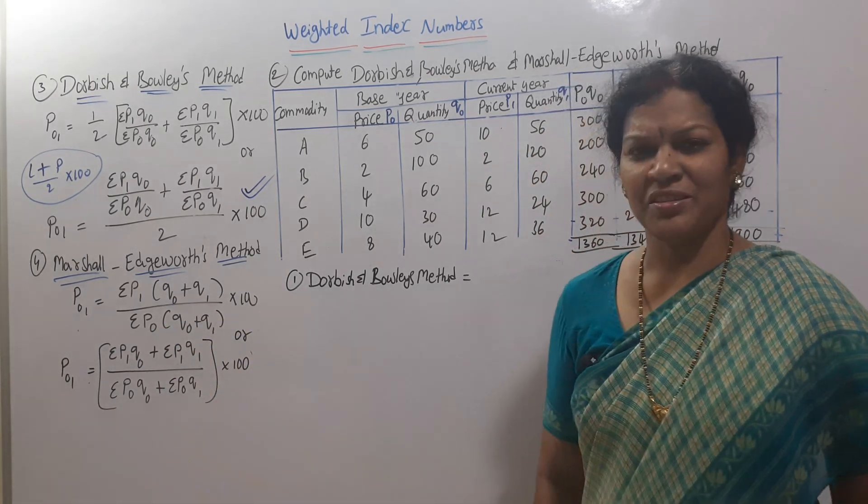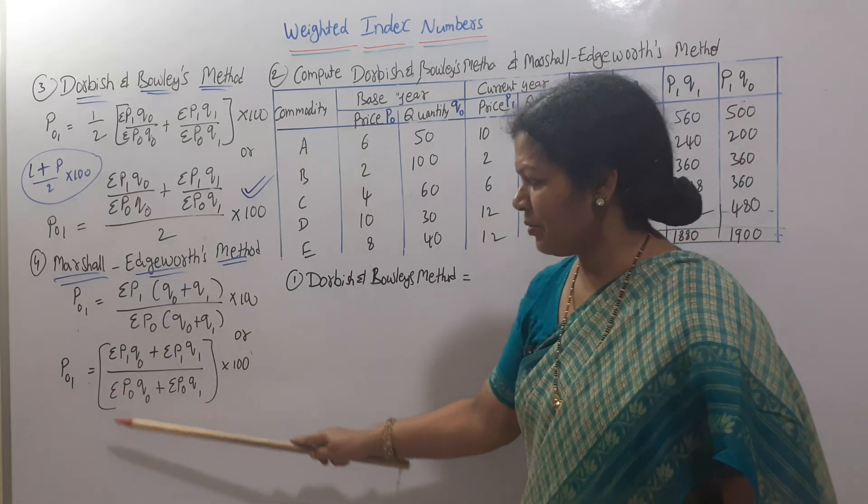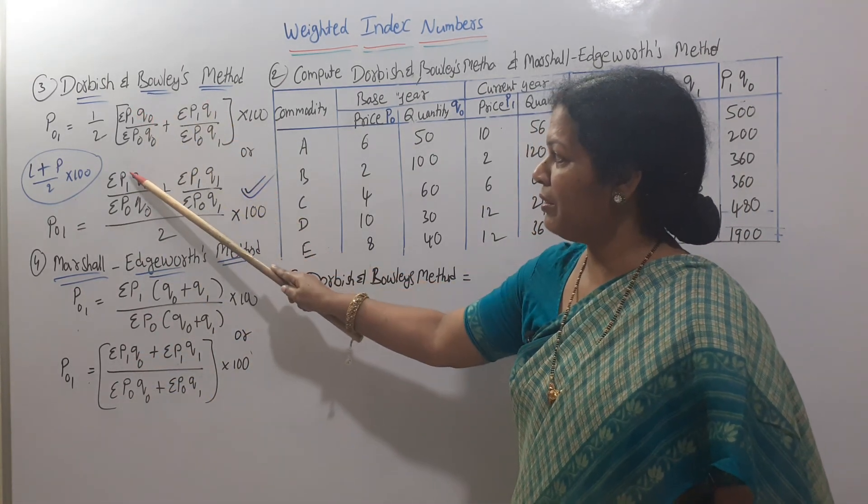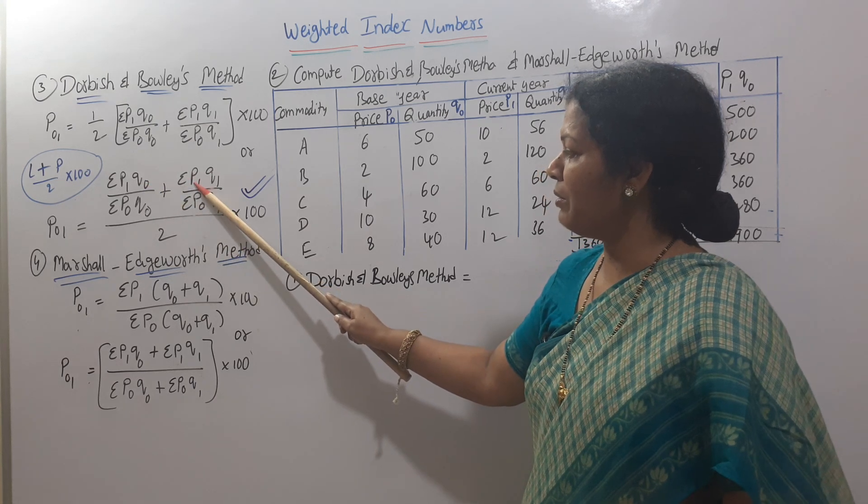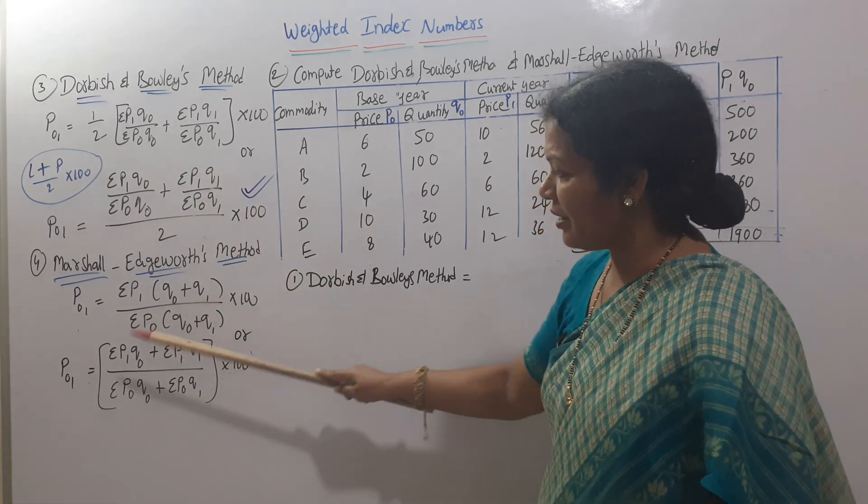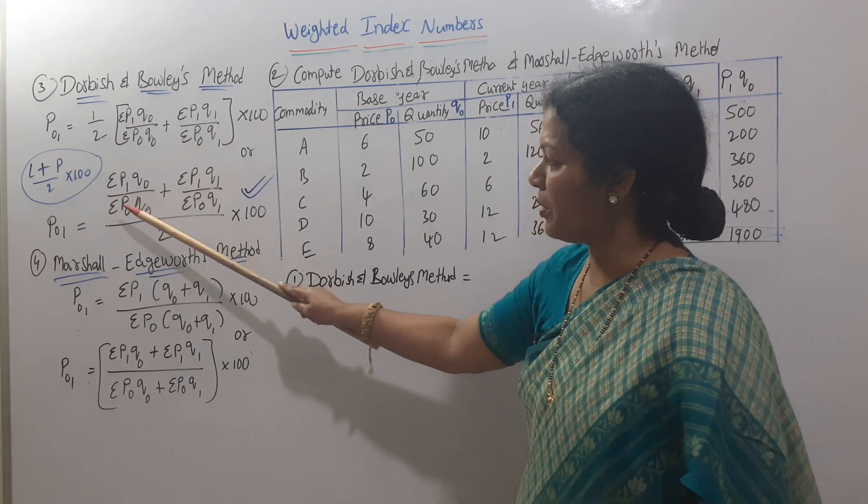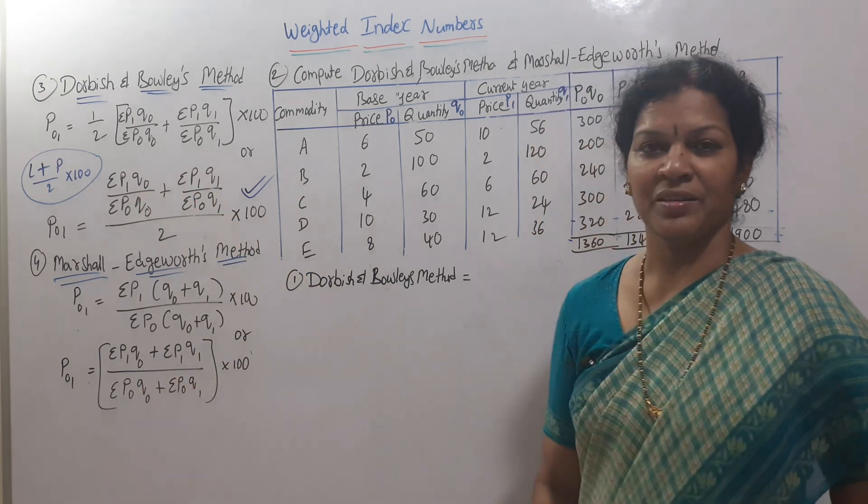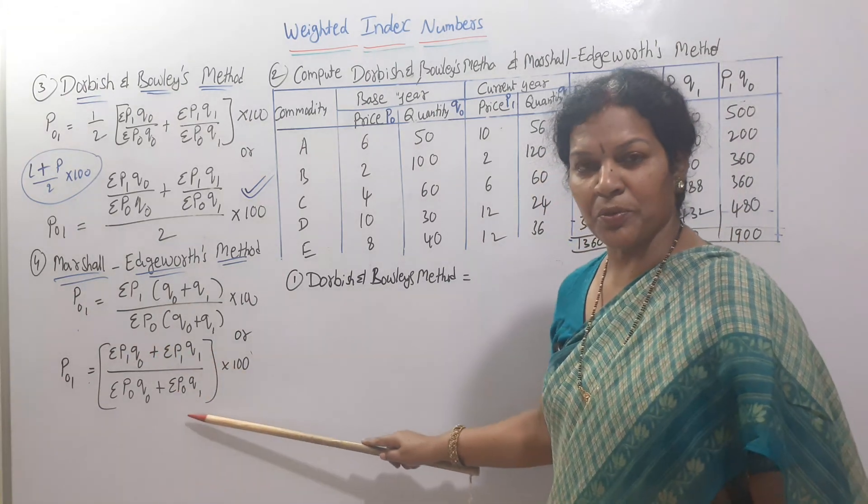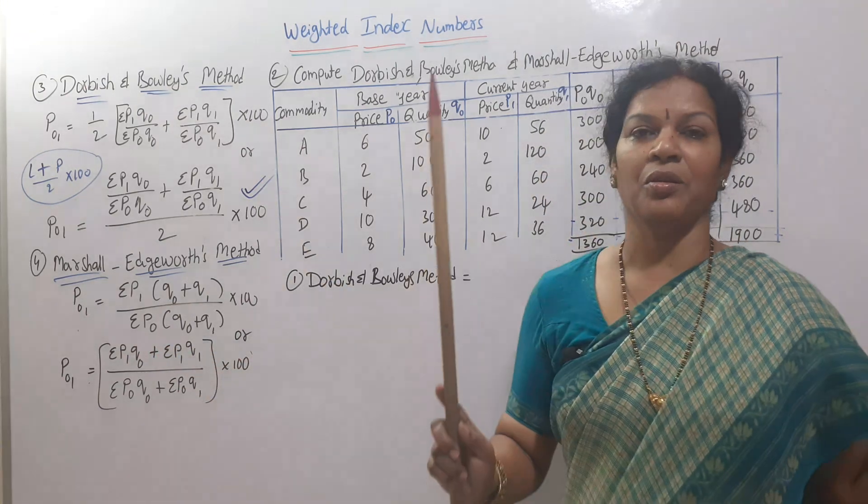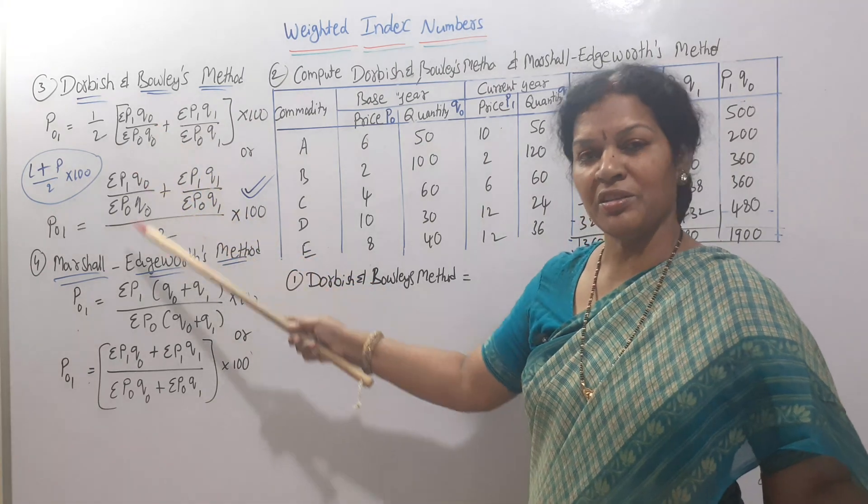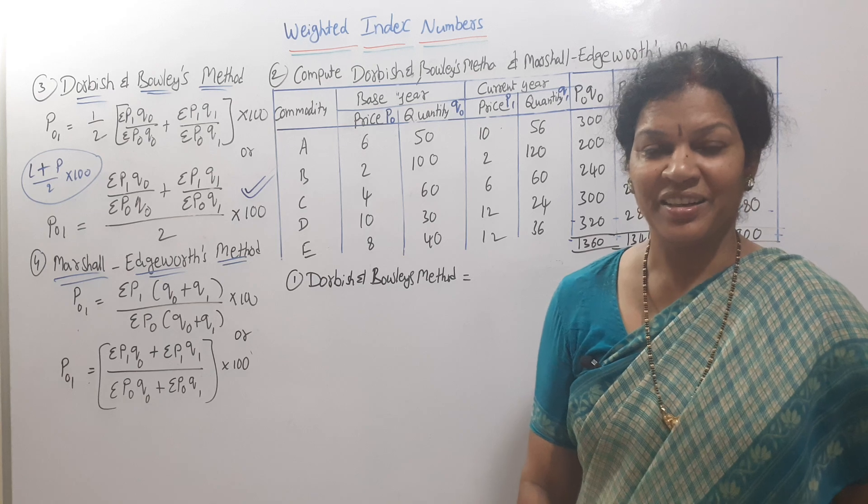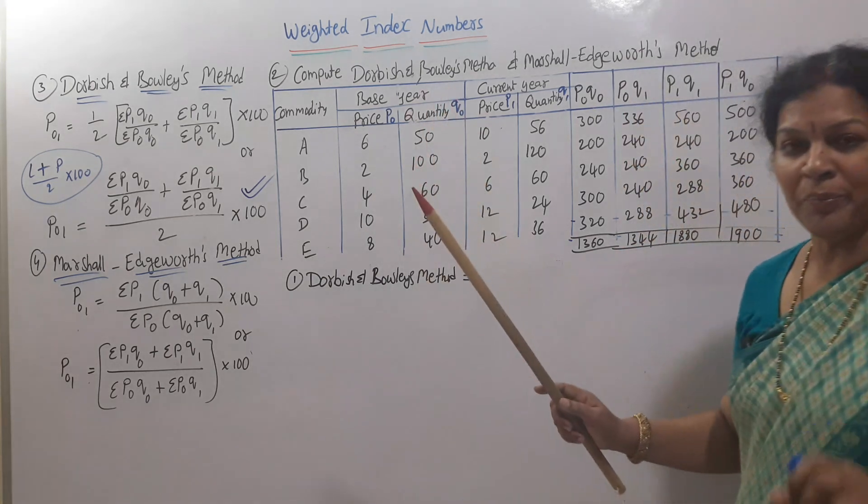If you see this formula, the upper portion P1Q0 plus P1Q1 divided by the lower portion P0Q0 plus P0Q1 into 100. If you know Dorbish-Bowley, this is the same with a little change. The formula for the problem is given.